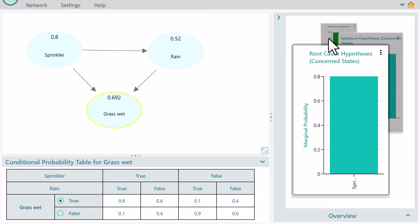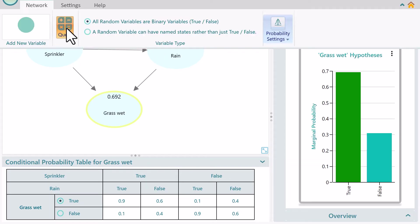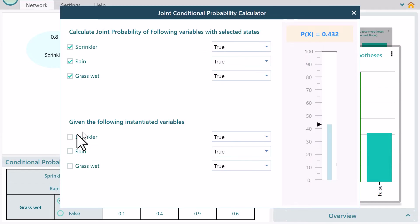Once a Bayesian network is modeled, query the network with the visual graphical user interface.